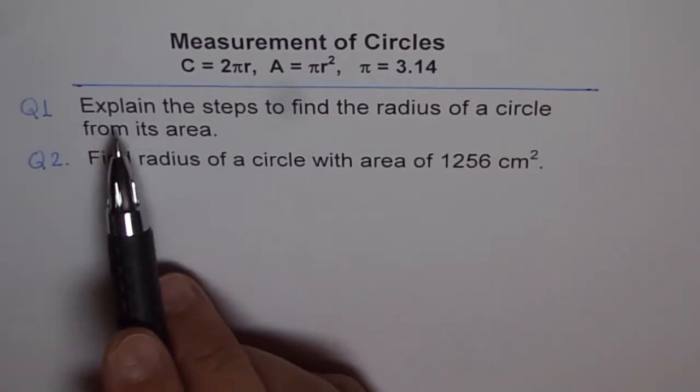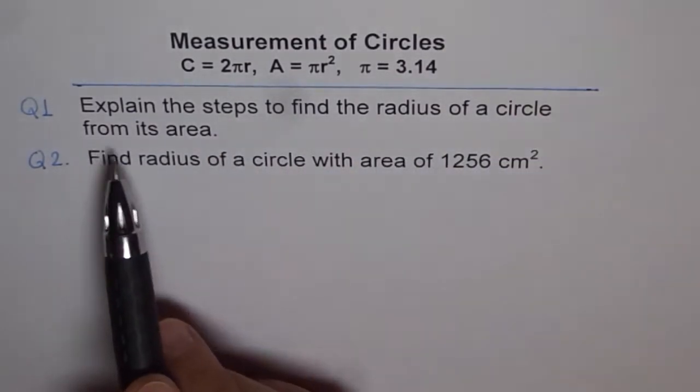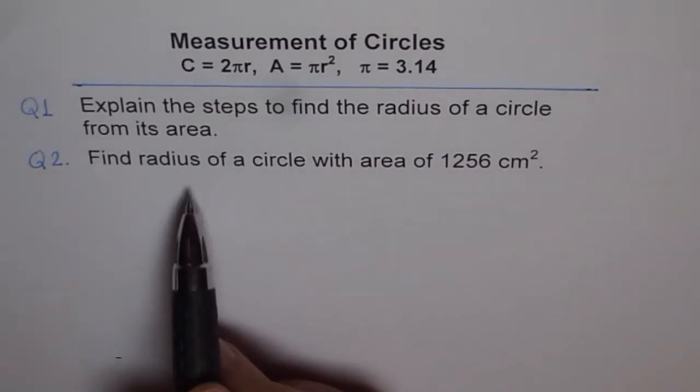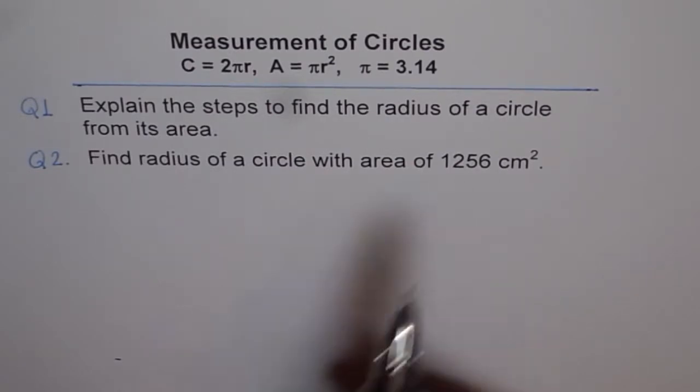Question 1: Explain the steps to find the radius of a circle from its area. And question 2 is: find radius of a circle with area of 1256 cm².